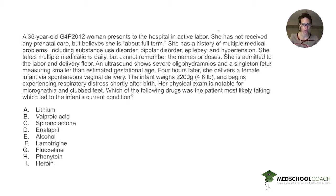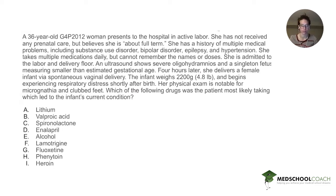A 36-year-old G4P2012 woman presents to the hospital in active labor. She has not received any prenatal care but believes she is about full term. She has a history of multiple medical problems including substance use disorder, bipolar disorder, epilepsy, and hypertension. She takes multiple medications daily but cannot remember the names or doses. She is admitted to labor and delivery. An ultrasound shows severe oligohydramnios and a singleton fetus measuring smaller than estimated gestational age. Four hours later, she delivers a female infant via spontaneous vaginal delivery. The infant weighs 2,200 grams, or about 4.8 pounds, and begins experiencing respiratory distress shortly after birth. Her physical exam is notable for micrognathia and clubbed feet. Which of the following drugs was the patient most likely taking, which led to the infant's current condition?